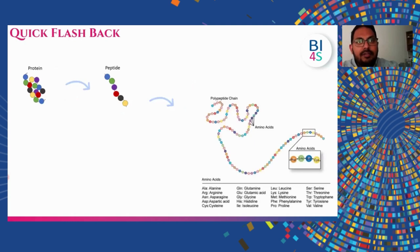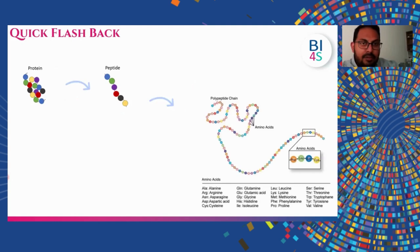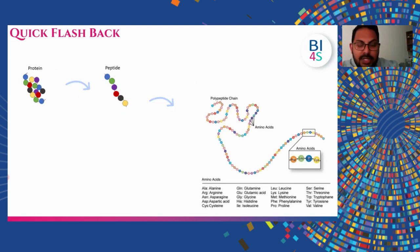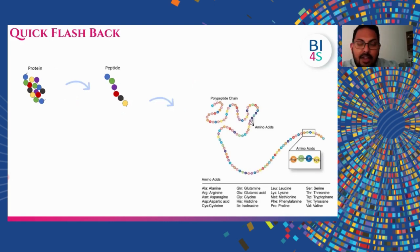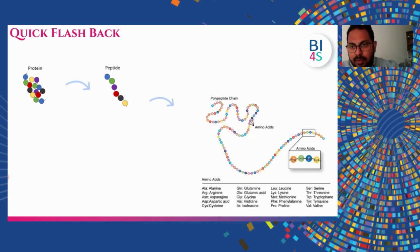Just to give a quick flashback: proteins are formed of peptides, and peptides in turn are made up of amino acid sequences which are present like beads in a chain. We have 20 naturally occurring amino acids which form peptides, which then form proteins.